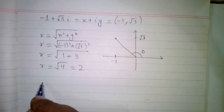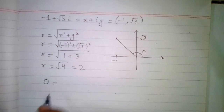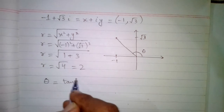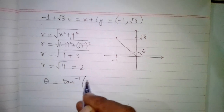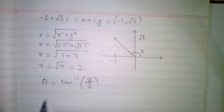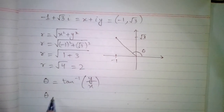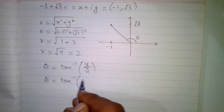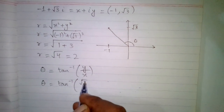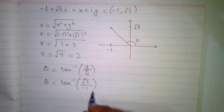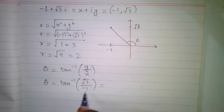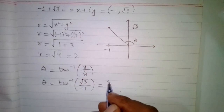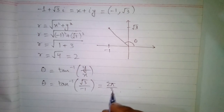Now we will find the angle theta, or argument of the complex number, which is equal to tan inverse of y upon x. So theta equals tan inverse of root 3 over minus 1, and this will be equal to 2 pi by 3.